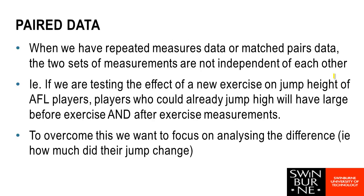With paired data, it will normally come out of either repeated measures or a matched pairs design. This is where we may look like we have two sets of numbers, but each of the sets of numbers is somehow linked. A very common example of paired data is where we have a before and an after. For example, if we were seeing whether a new exercise regime increased the jump height of AFL players, we would measure how high they could jump, get them doing the exercise, and then measure how high they could jump again — giving us a before and an after.